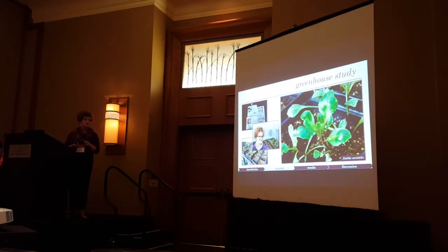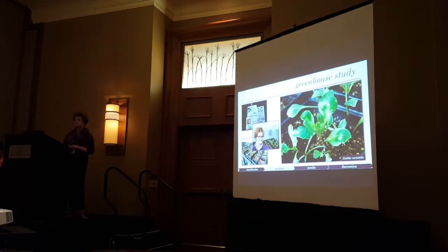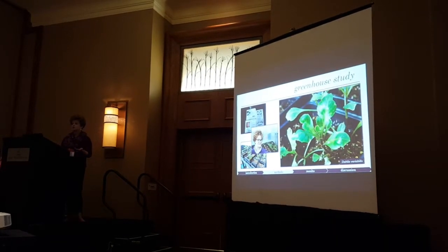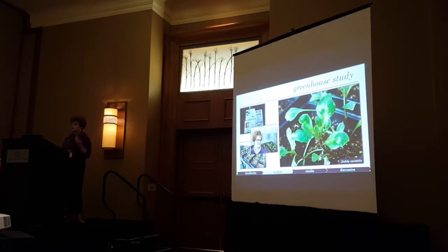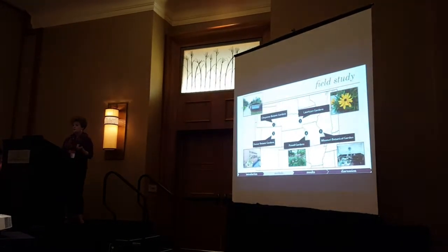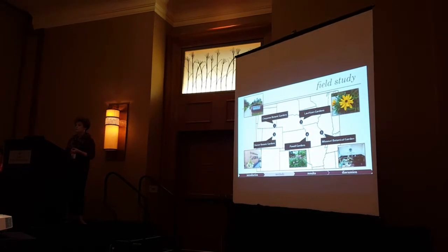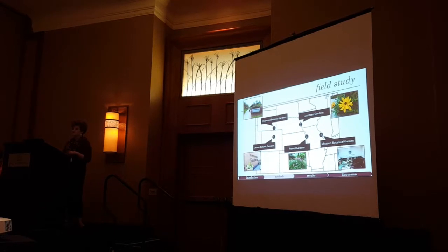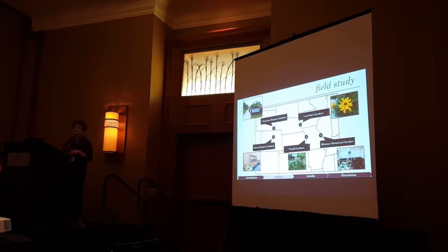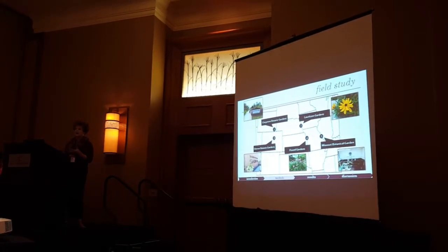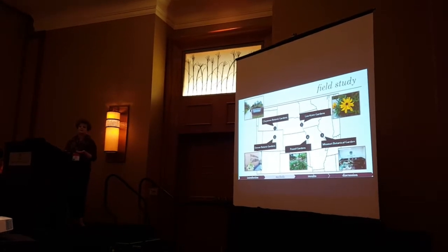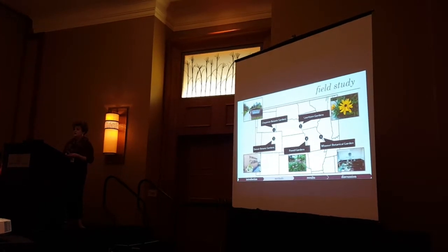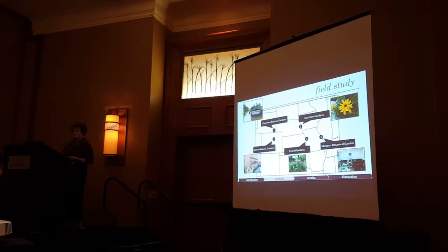The experiment had two parts. First, a greenhouse study where we grew plants on campus and harvested tissue. Second, a field study where we visited five botanical gardens and sampled plants to determine if DMVD-10 was present. Overall, we sampled roughly 35 species of Asteraceae across many different genera and tribes.